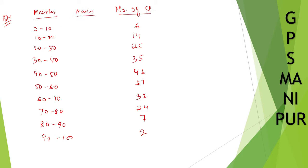So 0 plus 10 divided by 2, it will be 5. Midpoint 10 plus 20, 30, 30 divided by 2, 15. 20 plus 30 divided by 2, 50 divided by 2, it will be 25.